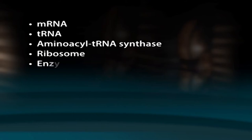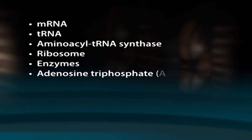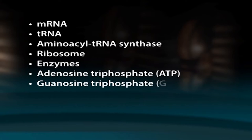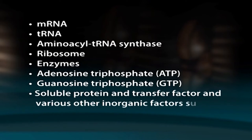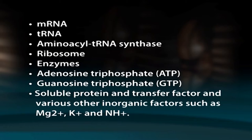The synthesis of a single protein requires the coordinated actions of protein synthesizing machineries. The machinery responsible for translating mRNA into protein is composed of the following components: mRNA, tRNA, aminoacyl tRNA synthetase, ribosome, enzymes, adenosine triphosphate (ATP), guanosine triphosphate (GTP), soluble protein and transfer factors, and various inorganic factors such as Mg2+, K+ and NH4+.